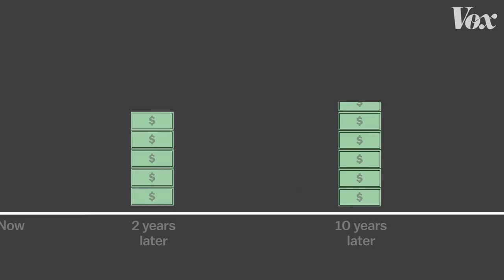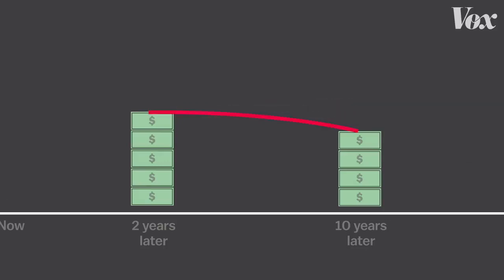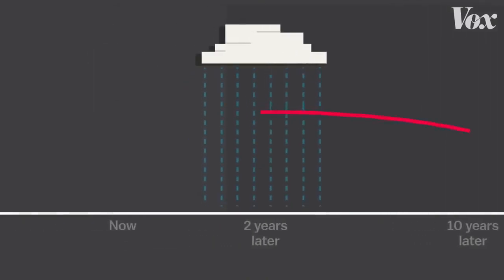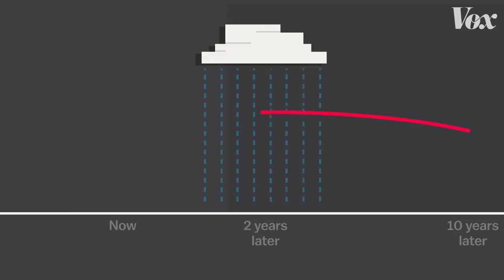So investors start yielding less money on long-term bonds. And if enough investors are acting on this expectation, the yield on a long-term bond — which is almost always higher than a short-term bond — can actually dip lower. And if you draw that yield curve, you can see that it goes in the other direction. It inverts. In other words, when this chart looks like this, it means investors think an economic downturn is probably coming in the near future.